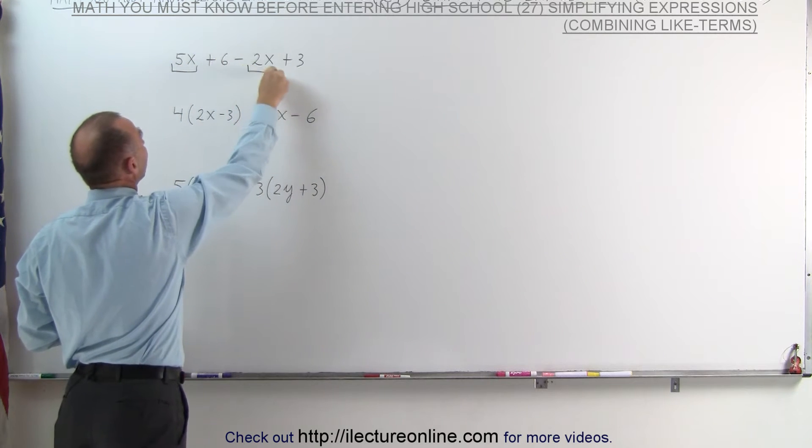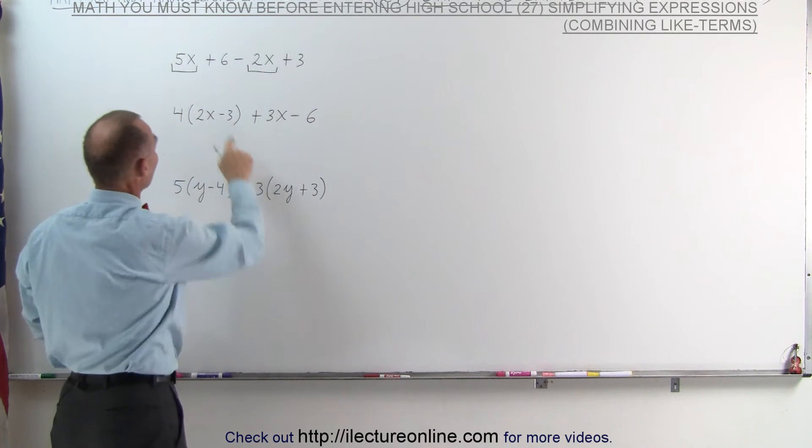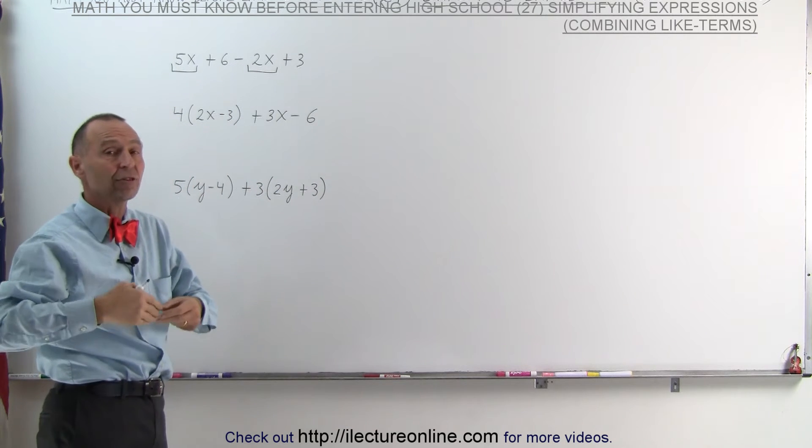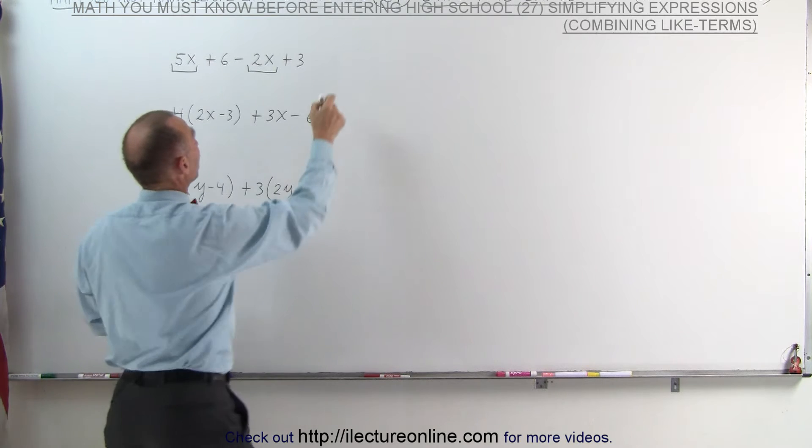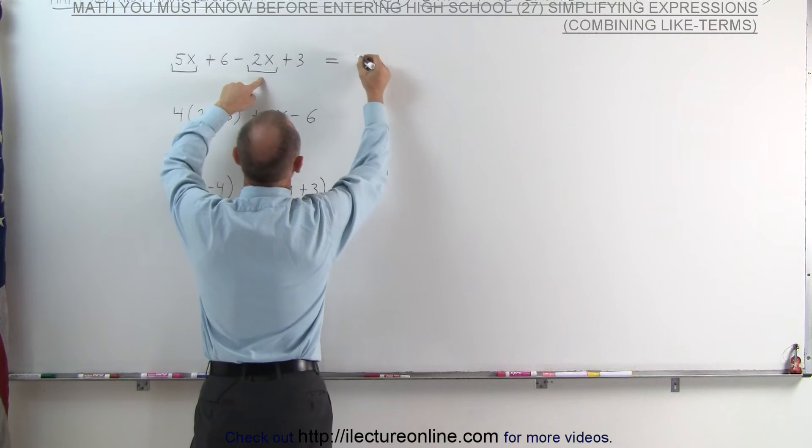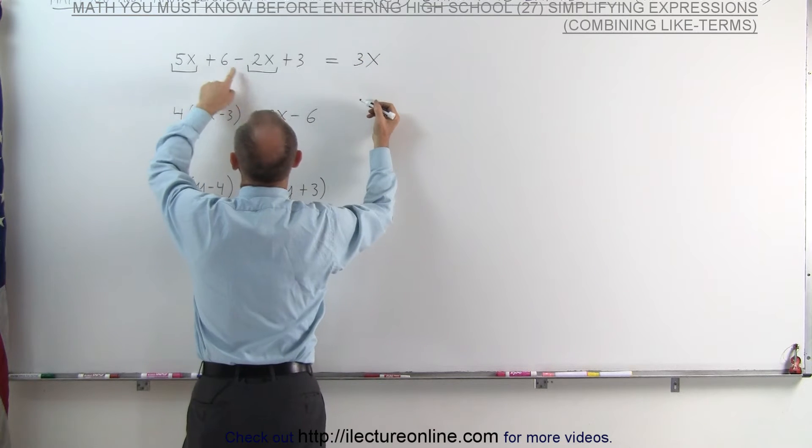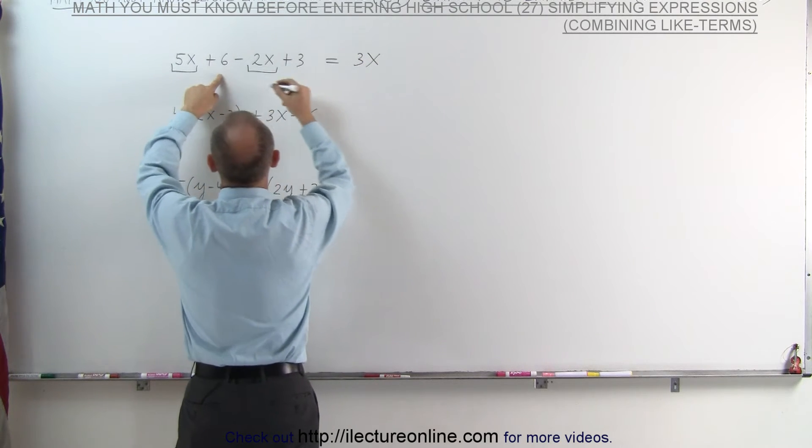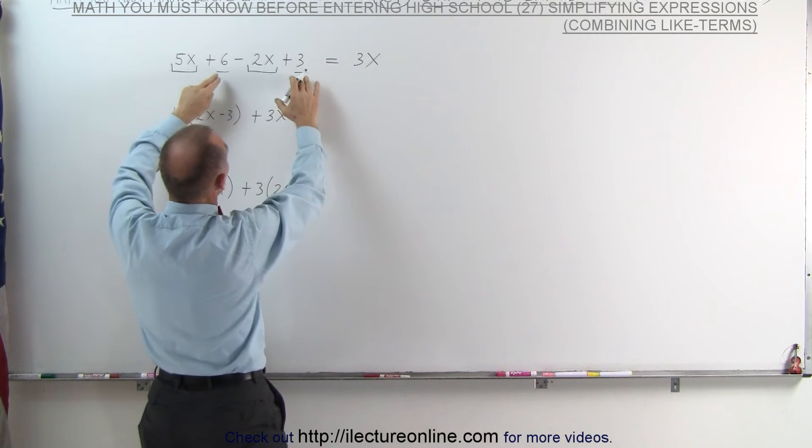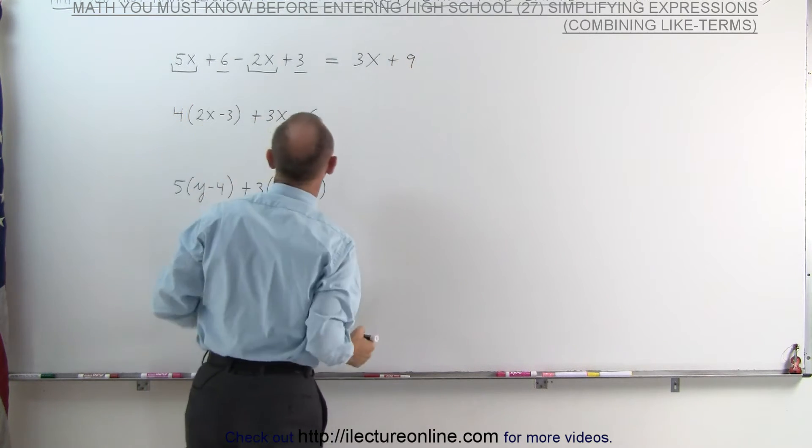And we combine like terms. In other words, 5x minus 2x is 3x. If you have 5x's and then you subtract 2x's from that, you're left with 3x's. So this simplifies to 3x. And 6 plus 3, because these are like terms as well, they're simply numbers, 6 plus 3 becomes 9.